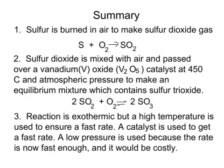This reaction is exothermic, meaning it gives out heat. A high temperature is used to ensure a fast rate of reaction. However, because the forward reaction is exothermic, the backward reaction is endothermic, so increasing the temperature actually encourages the reverse reaction and reduces the yield of sulfur trioxide. But that's acceptable because it's more important to get a small percentage of sulfur trioxide at a high rate of reaction than to have a massive yield produced slowly.